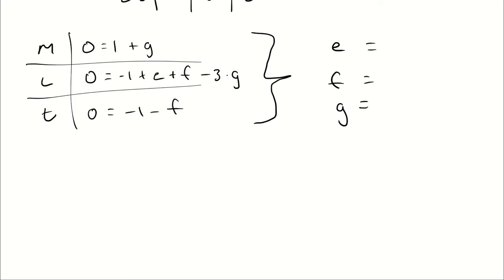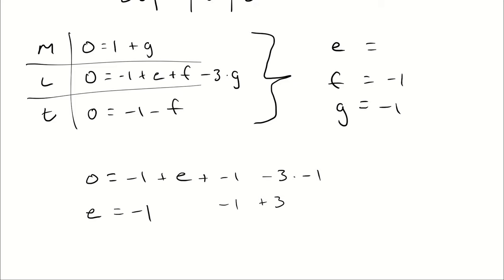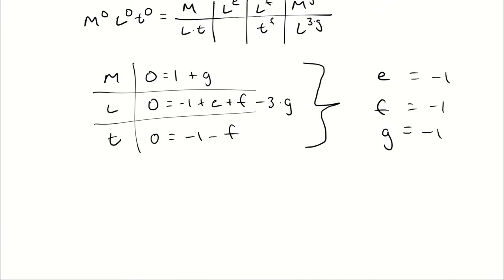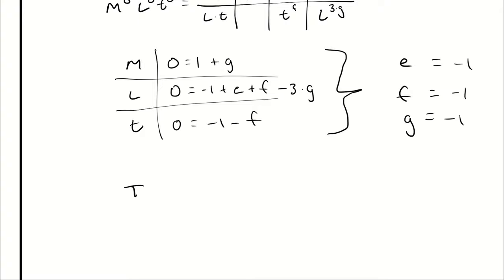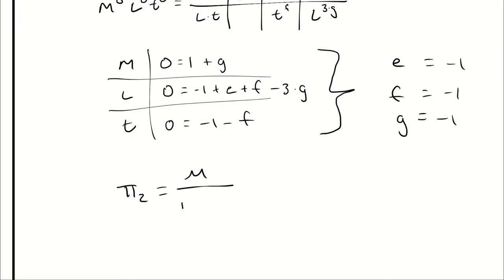Solving those three equations for three unknowns: from the mass equation, G = −1. From the time equation, F = −1. Substituting into the length equation: 0 = −1 + E + (−1) − 3(−1), which is −1 + E − 1 + 3 = positive 1, so E = −1. Therefore pi group two is viscosity divided by diameter times velocity times density.